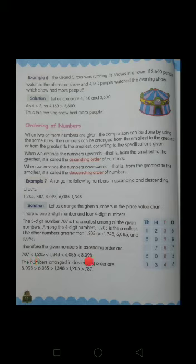Now, it will be the opposite of the sequence in ascending order. So the greatest to smallest number will be 8,098. Then 6,085. Then 1,348. Then the next 1,205. And 787 at last.